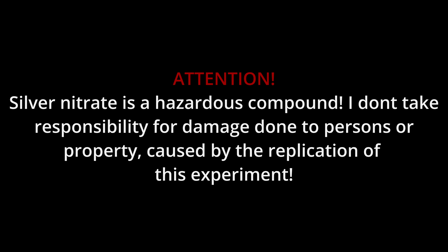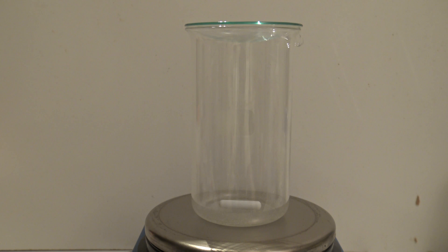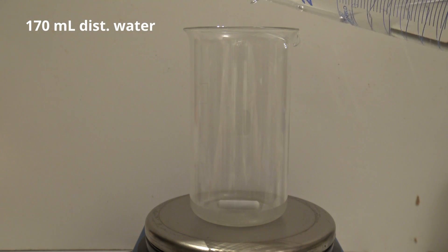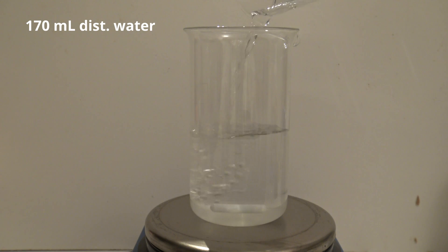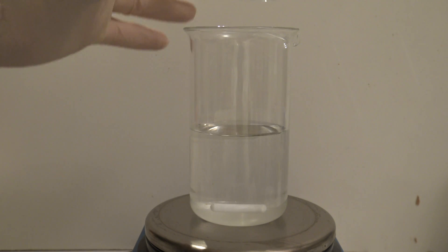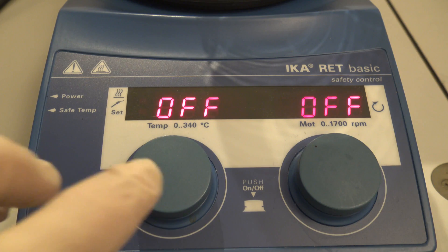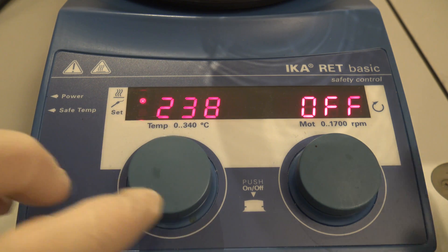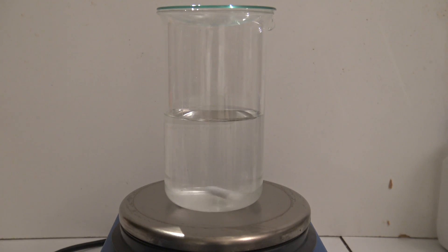For the experiment, a beaker with a stirring bar and a watch glass are placed on a hot plate stirrer. Then 170 milliliters of distilled water are added and heated to a boil.